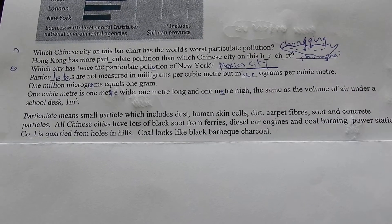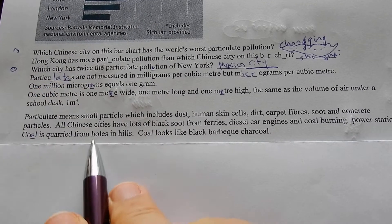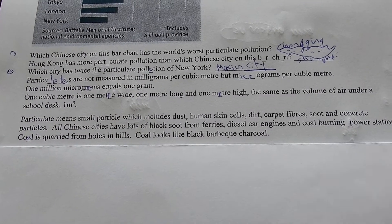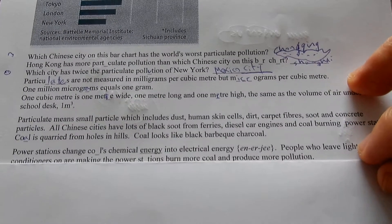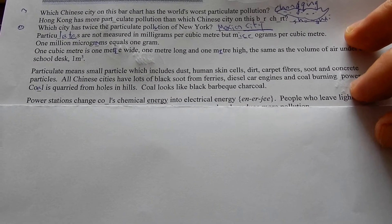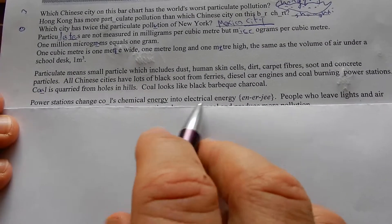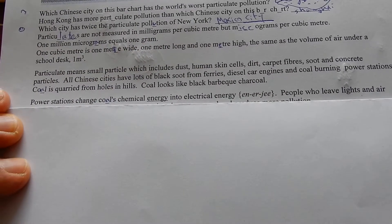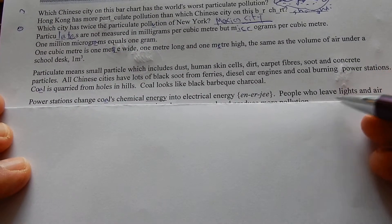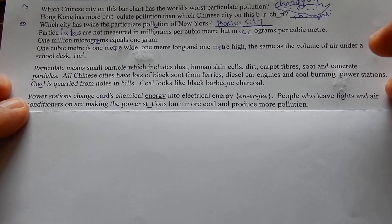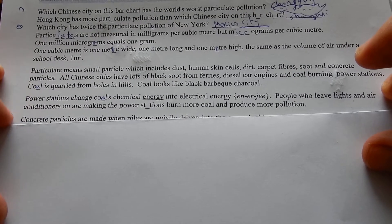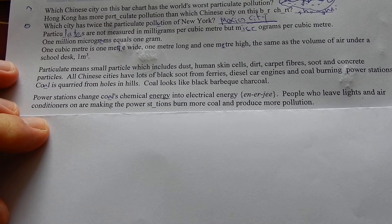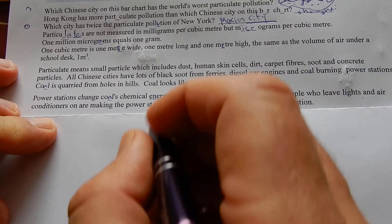Coal is quarried from holes in hills. Coal looks like black barbecue charcoal. Power stations change coal's chemical energy into electrical energy.